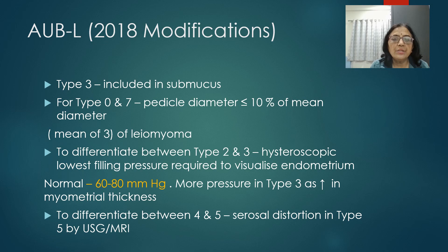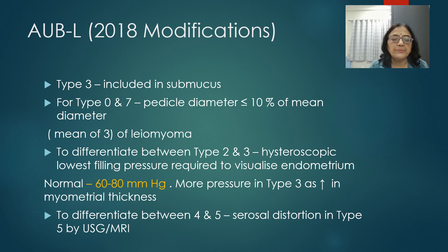The exact pressure values for differentiating type 2 from type 3 were not available to the speaker at time of recording; postgraduate students are invited to clarify in comments. To differentiate type 4 from type 5, serosal distortion is seen in type 5 and identified by ultrasonography or MRI.